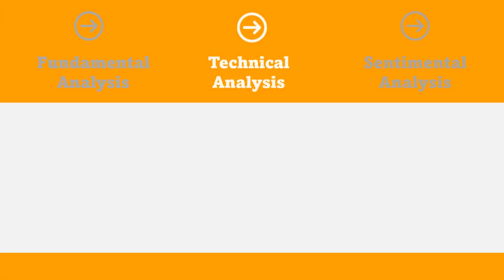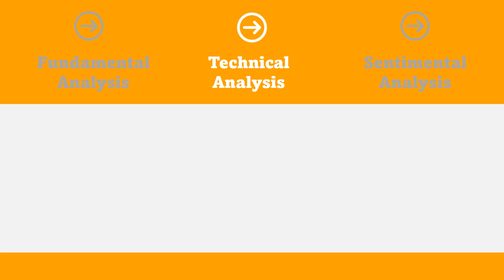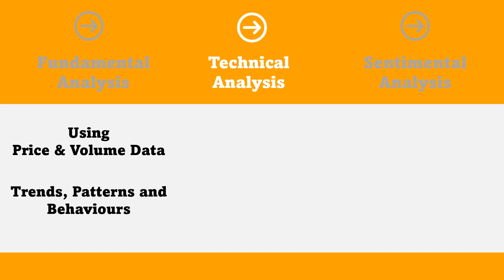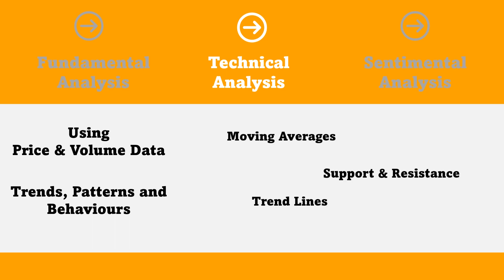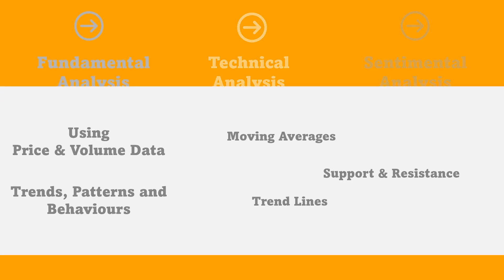Technical analysis is a method of evaluating stocks by analyzing statistics generated by market activities such as past price and volume. It is based on the idea that market trends, patterns, and behaviors can be identified and analyzed to predict future price movements. Technical analysts use a variety of tools and techniques such as charts and indicators to identify patterns and trends in market data. They look for signals such as support and resistance levels, trend lines, and moving averages. Some common technical indicators used by analysts are moving averages, Relative Strength Index (RSI), and Bollinger Bands.